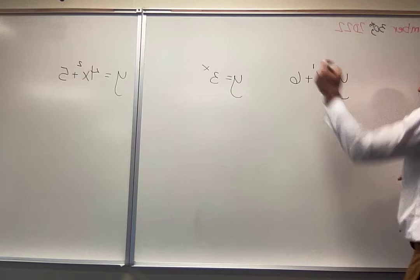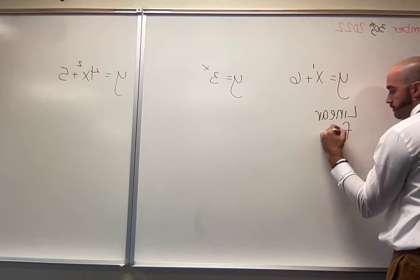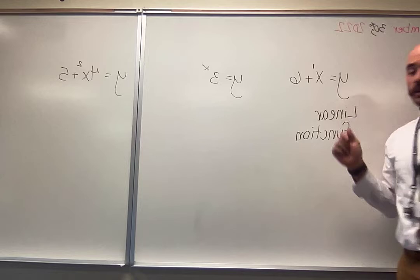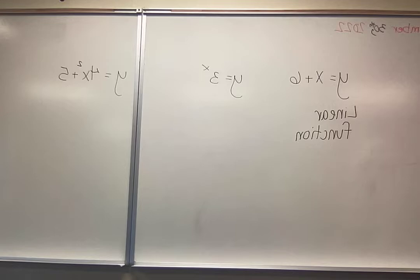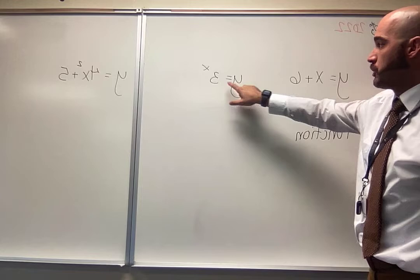So because it only has a 1 as an exponent, when that is its highest exponential value, we have a linear function. Again, you can think of it as a 1, or if you look through a problem and there is no exponential value there, we're thinking linear function. It should create a straight line.